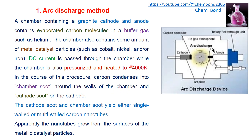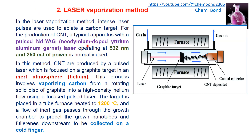Carbon condenses into chamber soot around the wall of the chamber and cathode soot on the cathode. When the graphite produces carbon, it condenses on the wall as chamber soot, and on the cathode as cathode soot. Both the cathode soot and chamber soot yield either single-wall or multi-wall carbon nanotubes. The nanotubes grow from the surface of the metallic catalyst particles.